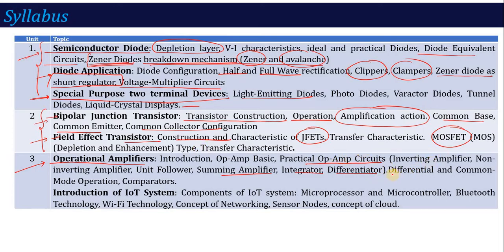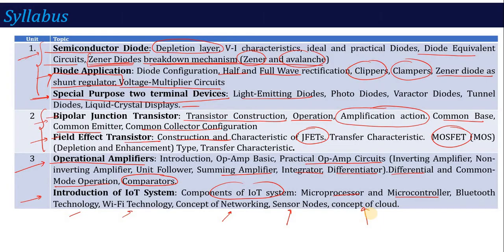Op-amp is very important — particularly differential and common mode operations, and how you operate op-amp as a comparator. We will cover all these things on operational amplifier. Then in this third unit, another topic is introduction to IoT system. We will cover what is an IoT system, its different components, microprocessor, microcontroller, Bluetooth technology, Wi-Fi technology, the concept of networking, what is a sensor, sensor node, and what is cloud.